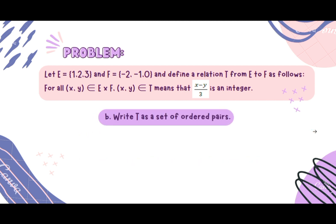Letter B: Write T as a set of ordered pairs. Here, we just need to pair the numbers that satisfy the given rule, those that resulted in integers. We have T equals the set of ordered pairs (1, -2), (2, -1), (3, 0).